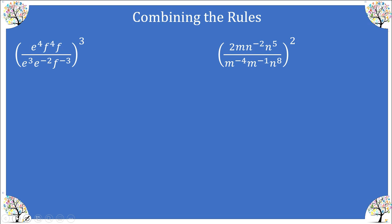Let's try two complex ones. Here we have powers raised to a power, plus the product rule and quotient rule. Before applying the power to a power, let's simplify inside first. In the numerator I can combine the f's using the product rule: f to the fourth times f to the first gives f to the fifth. On the bottom, e to the third and e to the negative two combine using the product rule — adding those exponents gives e to the first — and then I have f to the negative three.